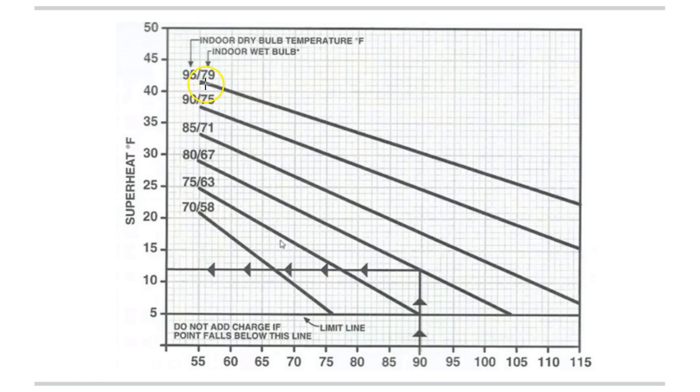First of all, these diagonal lines here are the indoor dry bulb wet bulb temperature, and then this bottom line here is the outdoor dry bulb temperature, and then this is the superheat line right here. So use all three of these lines to calculate the proper superheat for this fixed orifice system.